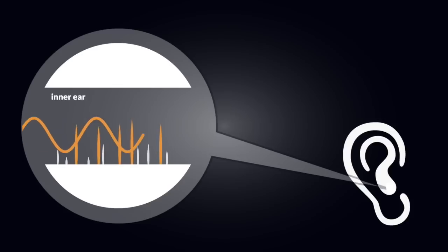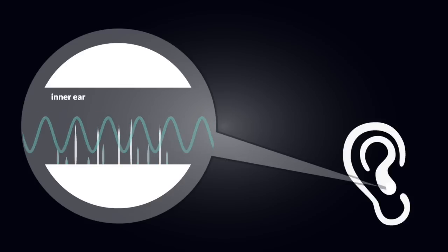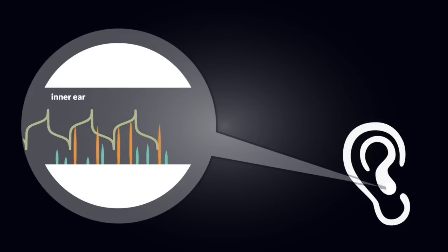For example, long hairs will pick up waves with lower frequencies, and short hairs will pick up waves with higher frequencies. When a complex sound wave enters the ear, the hairs help the brain break it down into individual frequencies.